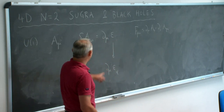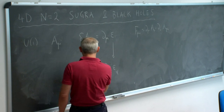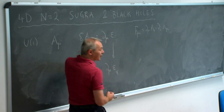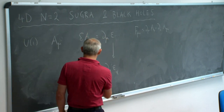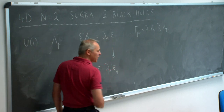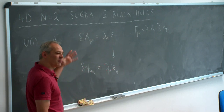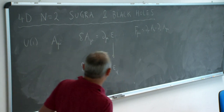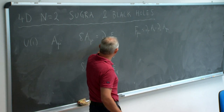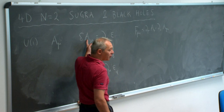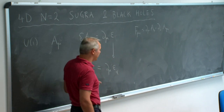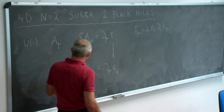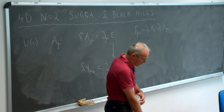Now consider changing this U(1) gauge symmetry by promoting the gauge scalar function epsilon into a spinorial quantity. If you do this, you have to change the left-hand side as well — the most obvious thing is to make the gauge field a spinor too, which we call the gravitino later on. This has nothing to do with gravity at all at this point. So spin zero became spin one-half, and spin one became spin three-half, and because it is spinorial, it has to be anti-commuting.